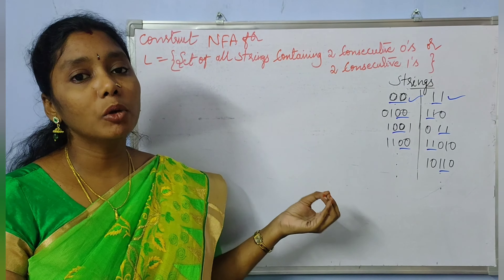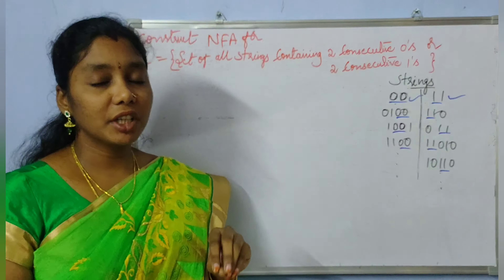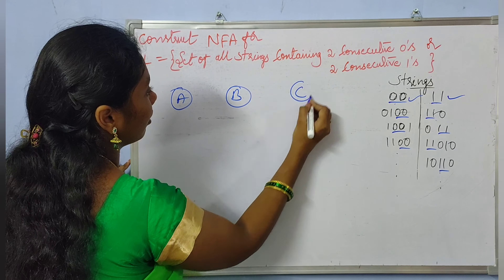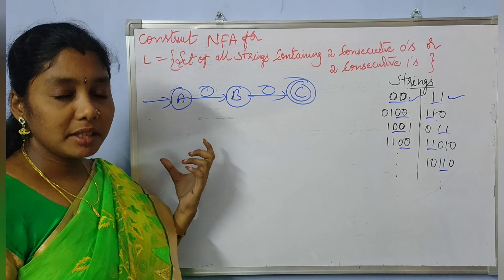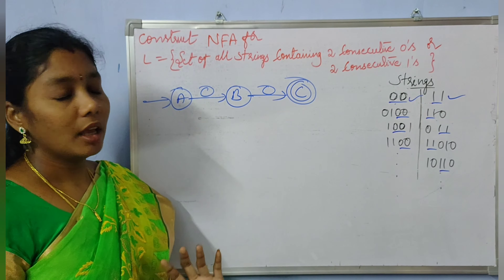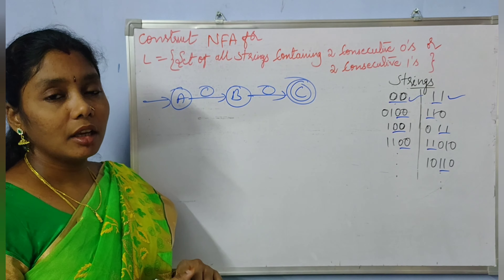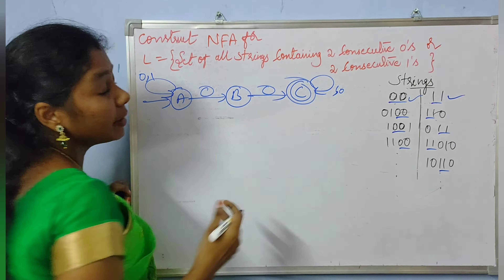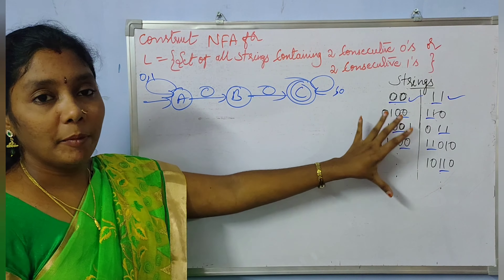For strings with two consecutive zeros, the minimal string is '00', so the length of the minimal string is two. To draw the NFA we need to have three states. It should accept the minimal string '00', and there is no restriction for the beginning and ending of the strings — we can have as many zeros and ones at both ends. That's why we add self-loop transitions on the initial and final states.